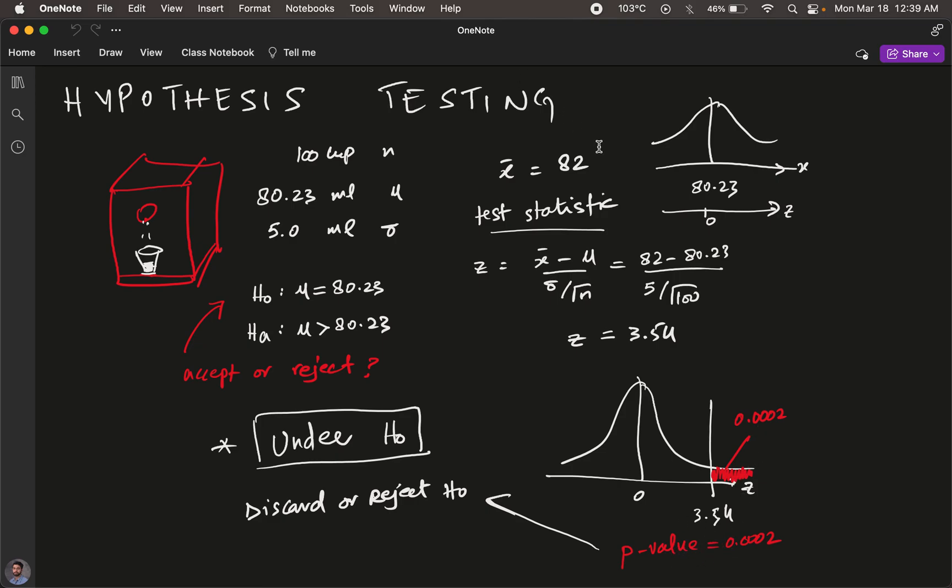What does 0.0002 really mean? This is the likelihood of 82 being a coincidence. Since this is a very small probability, this is not a coincidence. This is something we should be worried about. 82 has a very low likelihood of being a one-off chance, so we gave credibility to the alternative hypothesis and rejected the null hypothesis.